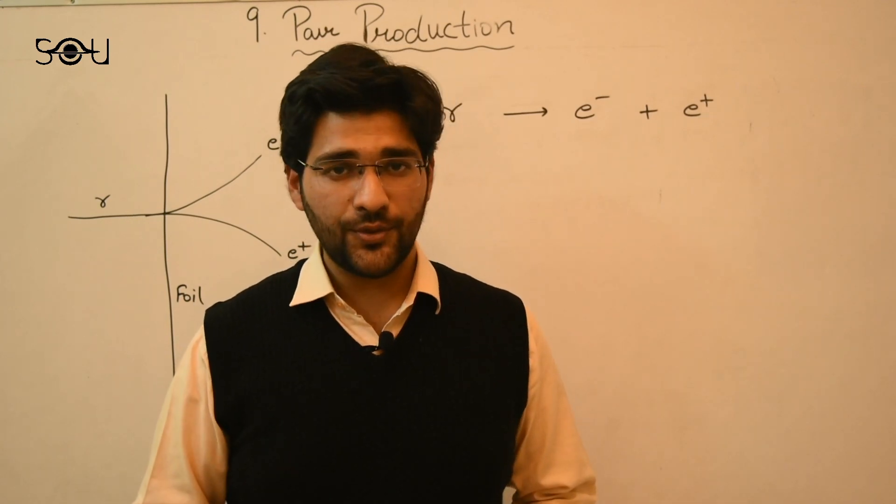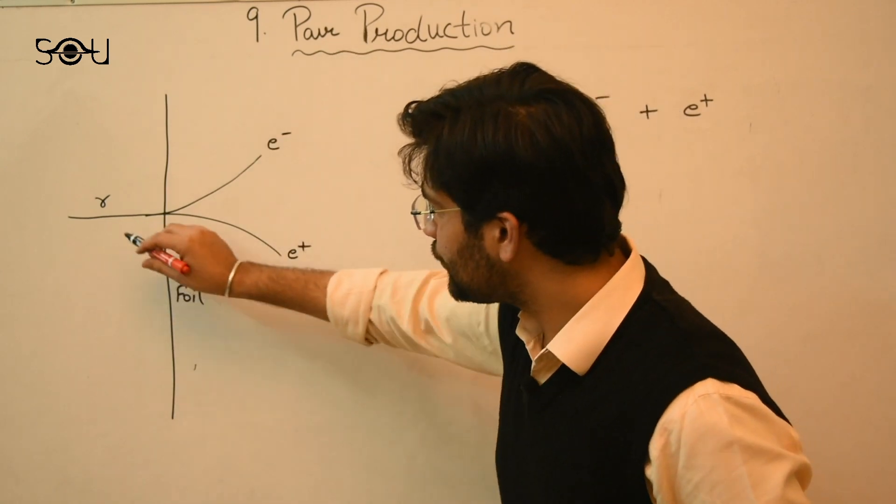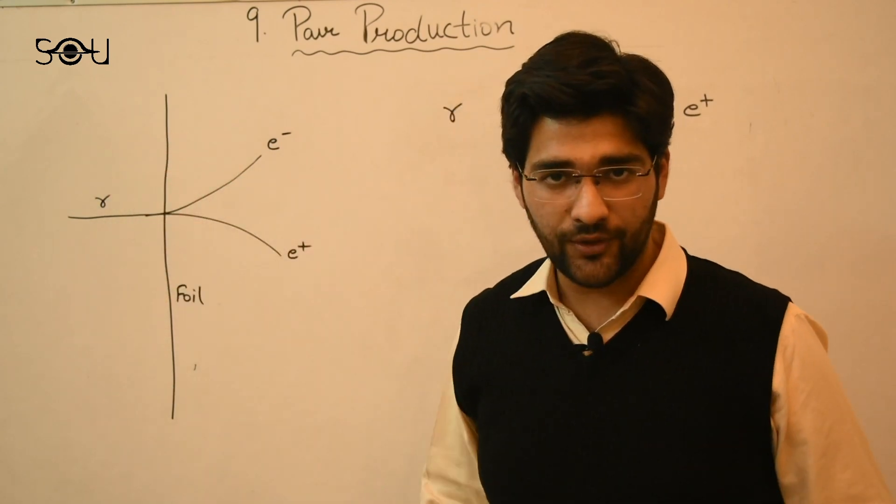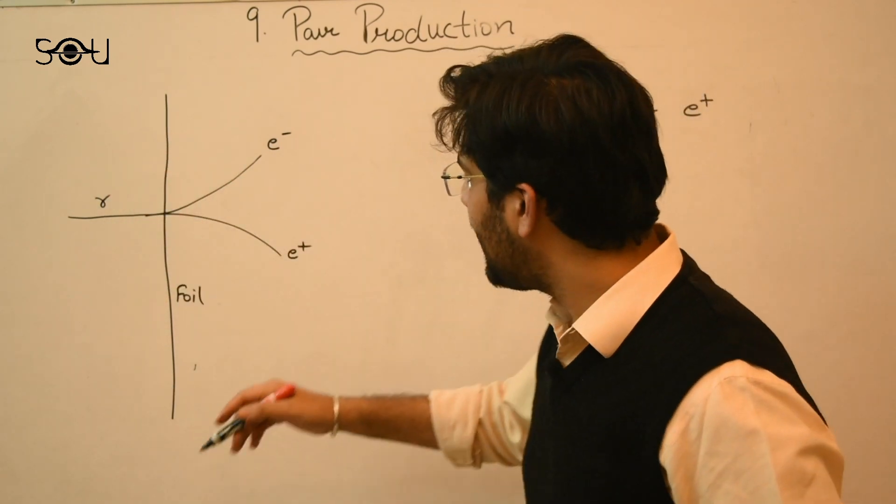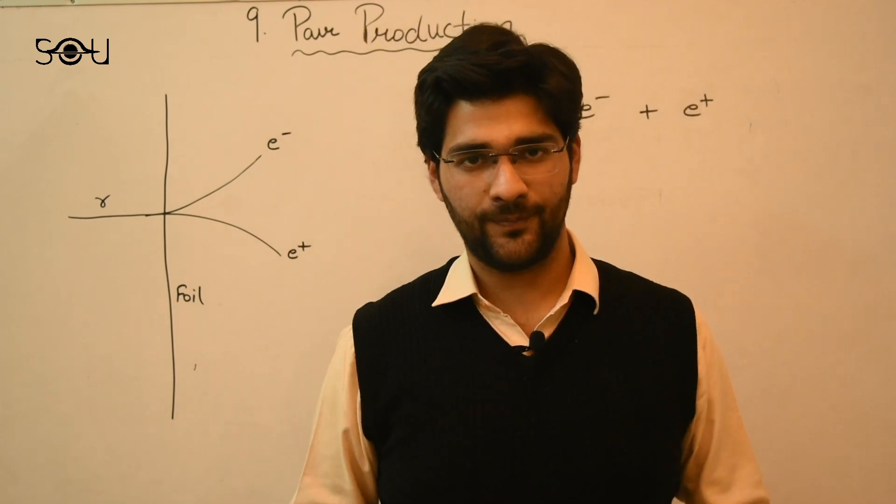Can all the photons produce matter and antimatter pair? That is, if I use a visible photon, that is photon of the visible range instead of a gamma ray photon, can it produce the particle and antiparticle pair?